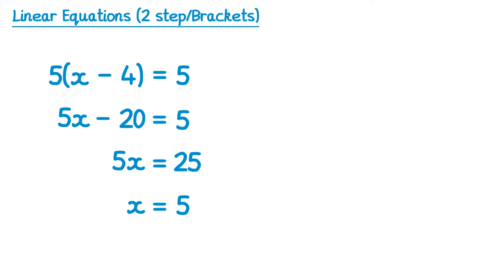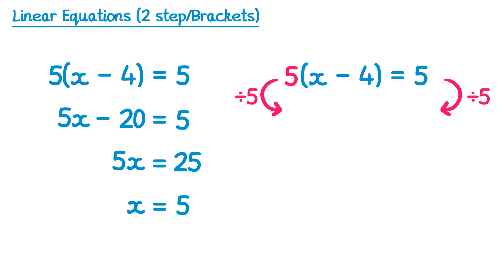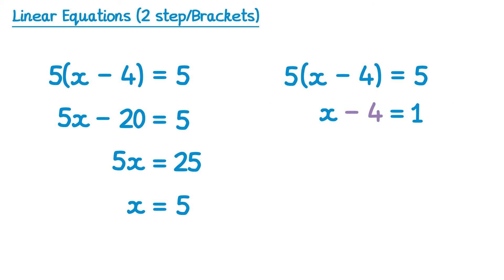Now let's solve the same equation using the other approach. We start by dividing by 5 on both sides. On the left we end up with x minus 4, and on the right 5 divided by 5 is 1. Now we deal with this subtract 4 by adding 4 to both sides. On the left hand side we just get x, and on the right hand side 1 add 4 is 5.